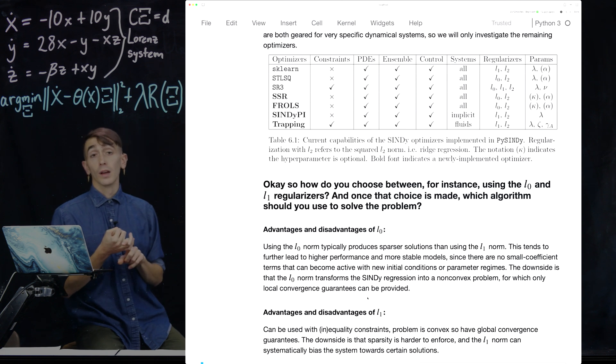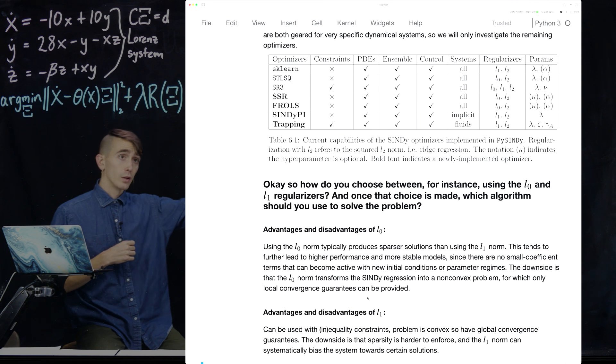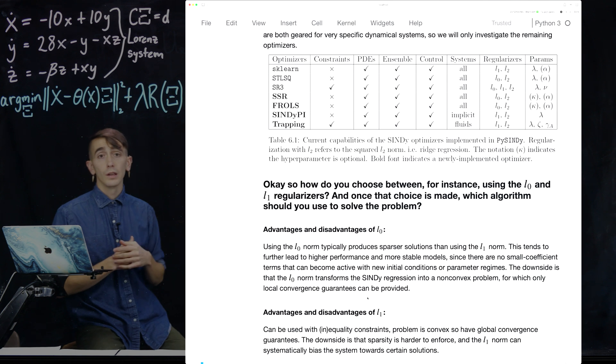So hyperparameters is one way to decide which optimizer to use. As I said, if you have physical priors that you want to build in as constraints, you have to use SR3 or trapping SINDY. And then otherwise, you have some freedom and you can play around with things to see which optimizers work best for you. So I'm going to leave it there for part four and we're going to conclude with part five and conclude this video series. So thanks for listening and we'll finish up next video.